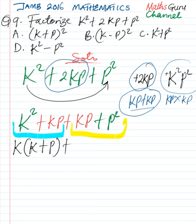Then plus what is common to kp and p square is p. kp divided by p, we are going to have k plus p square divided by p is going to be p.